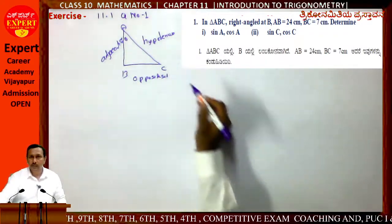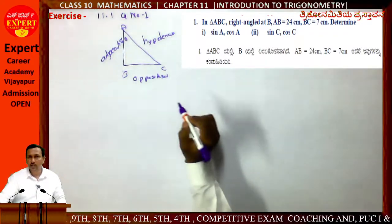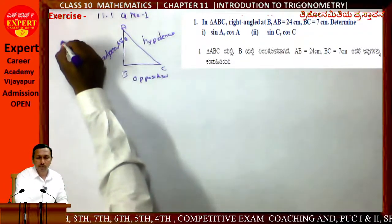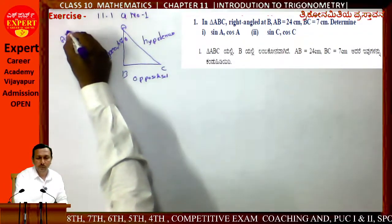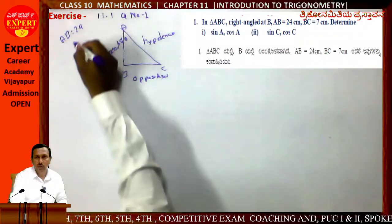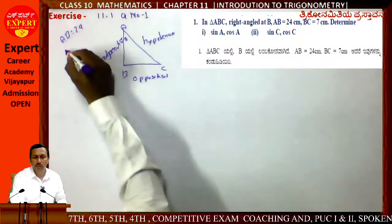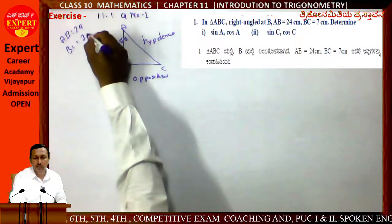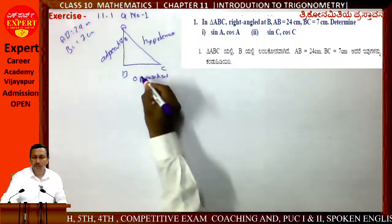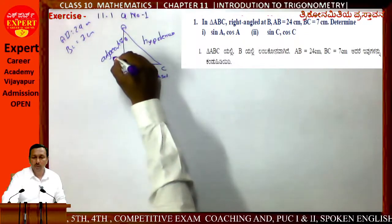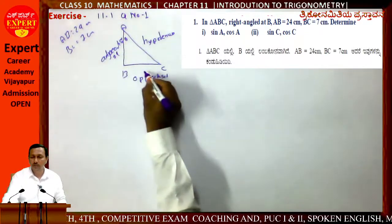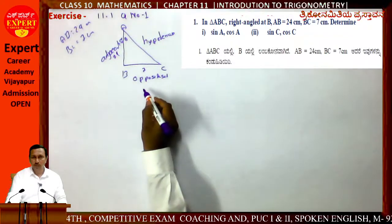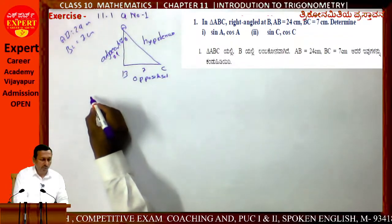Given: AB = 24 cm and BC = 7 cm. Now applying the Pythagorean Theorem to triangle ABC.